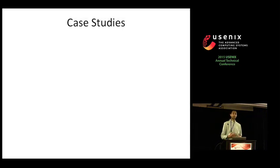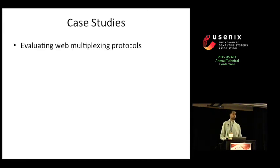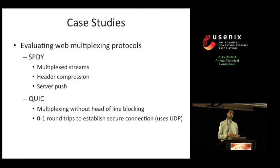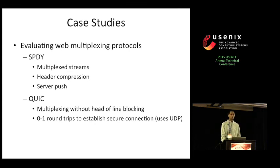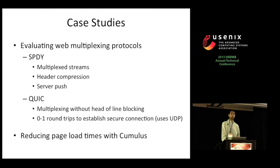Now I'll switch gears to discuss several case studies. First, we evaluated both existing and emerging web multiplexing protocols: HTTP, SPDY, and QUIC — two multiplexing protocols proposed by Google to improve web performance. With QUIC, they use UDP instead of TCP to eliminate startup connection overhead. Based on these results, I'll present a new system called Cumulus, whose main goal is to reduce web page load times specifically over long-delay links.